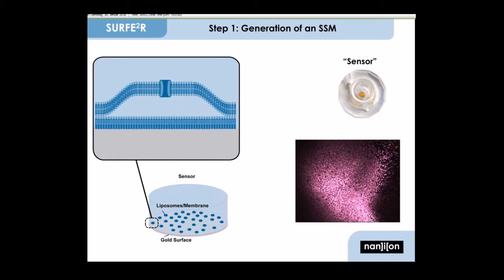The first step to perform a SURFER measurement is to establish this SSM. This happens on a so-called SURFER sensor, which you can see in the upper right corner. On the left side is a cartoon view of the setup of such a sensor. It consists of a thin gold substrate which is coated with an alkanethiol layer. In advance of the experiment, a phospholipid solution is added to the sensor, where it forms a monolayer.